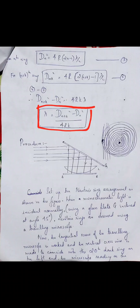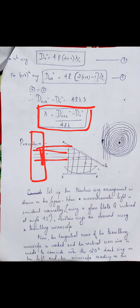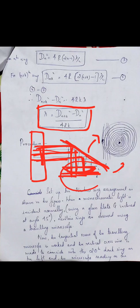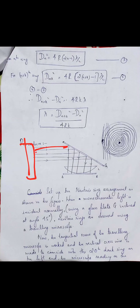Now, how do you perform the experiment? You take a sodium vapour lamp. The light from it is allowed to fall on a glass plate inclined at 45 degrees — this acts as a beam splitter. Below this inclined glass plate, you place your Newton's rings arrangement: the plano-convex lens on the plain glass plate. A parallel beam of light falls from the beam splitter and is incident normally on the Newton's rings setup.